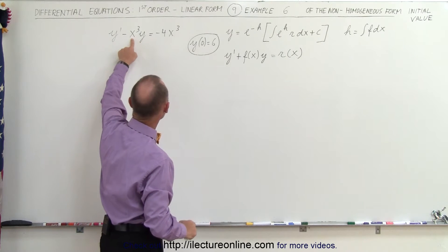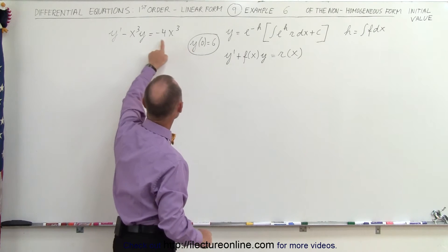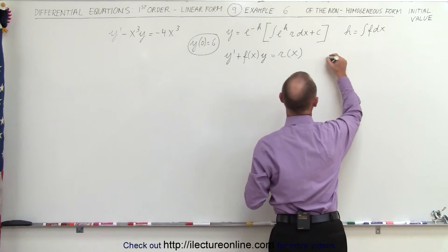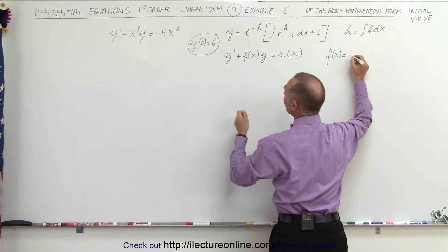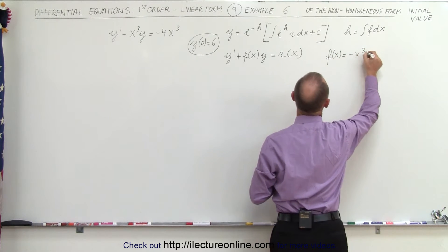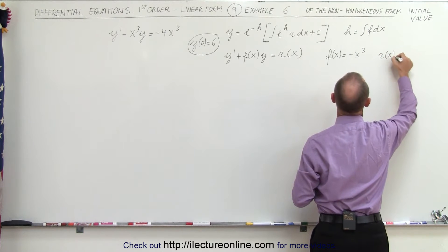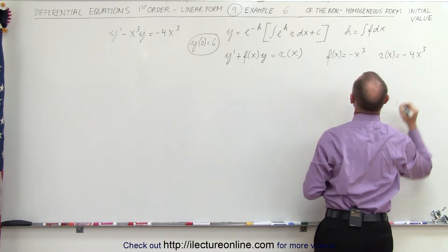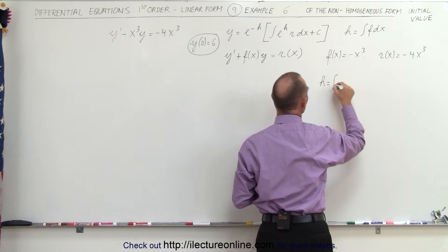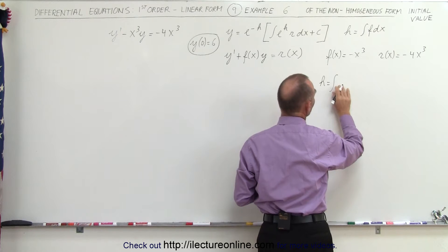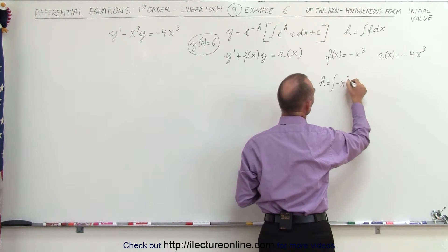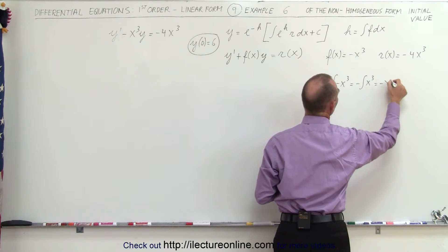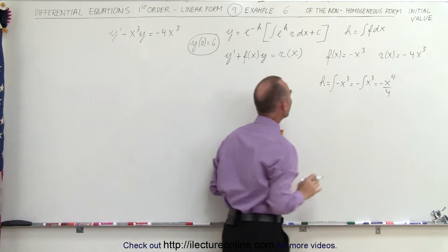We recognize that f of x is minus x cubed and r of x is equal to minus 4x cubed. So we have f of x equals minus x cubed, r of x equals minus 4x cubed. Then h, which equals the integral of f dx, is the integral of minus x cubed, which equals minus x to the fourth over 4.